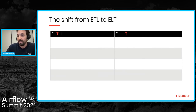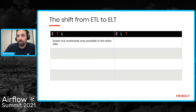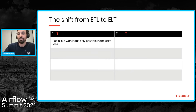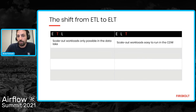When we had coupled storage and compute warehouses, the data lake was the only place where you could run scale-out workloads. Your data warehouse had fixed resources you couldn't dynamically change, and transformation workloads often require very hefty resources. In the ELT world, you can run scale-out workloads directly in your cloud data warehouse, and suddenly transformations become possible within it.